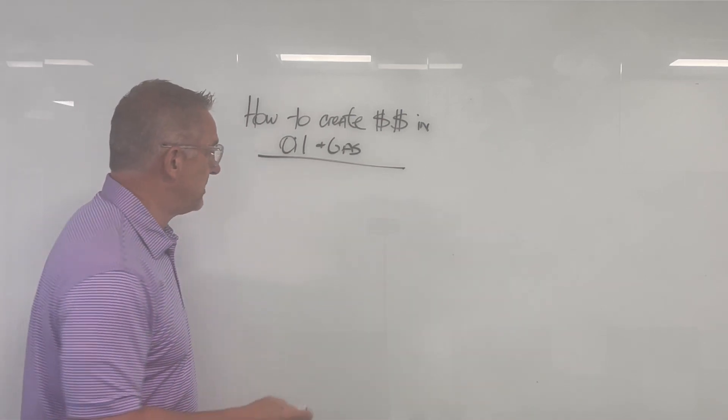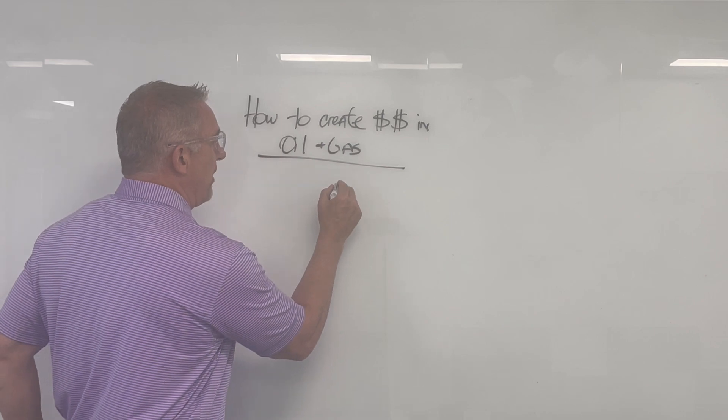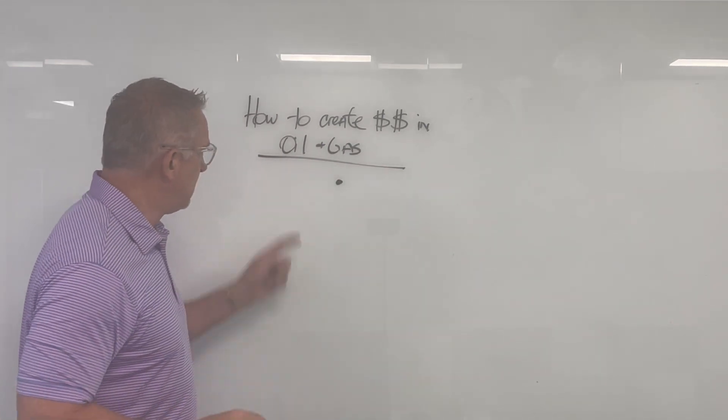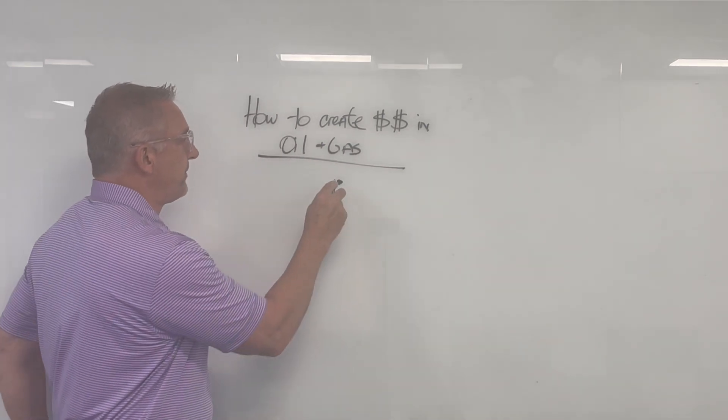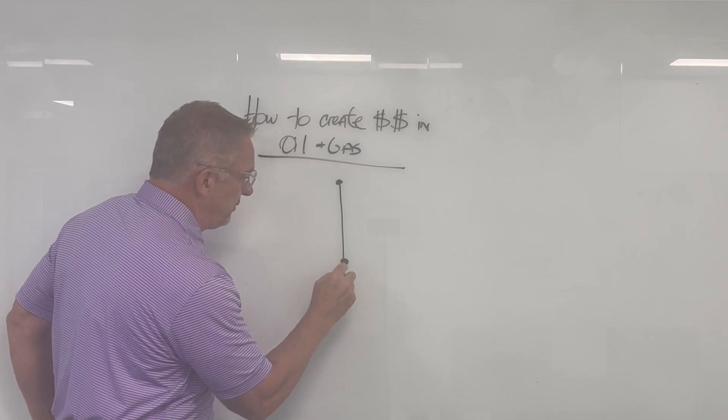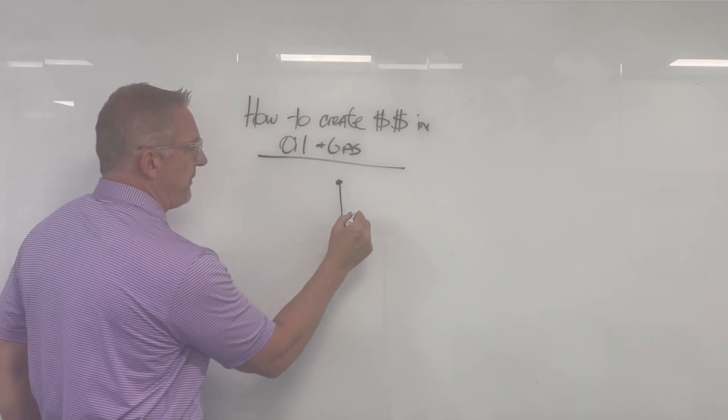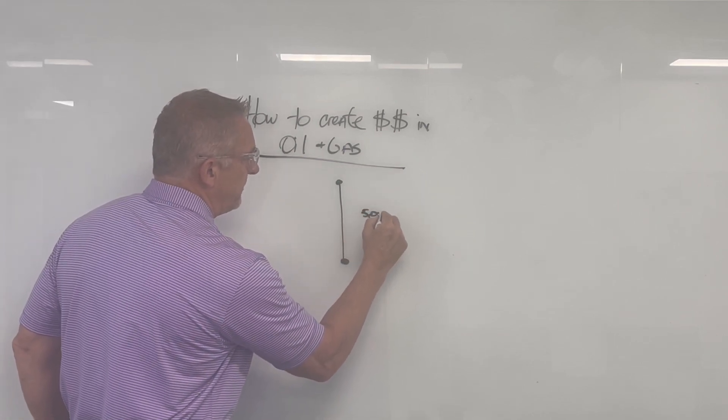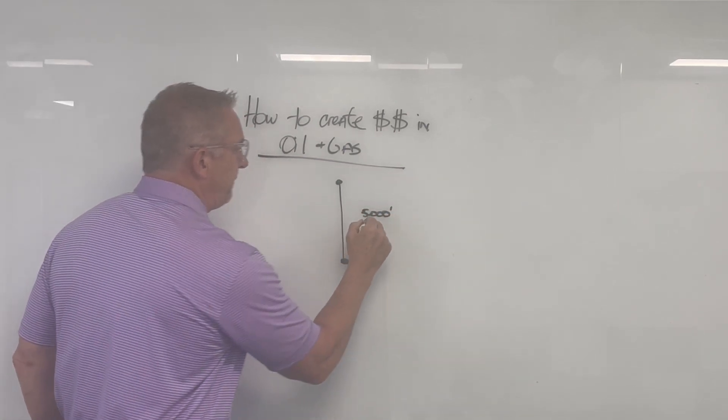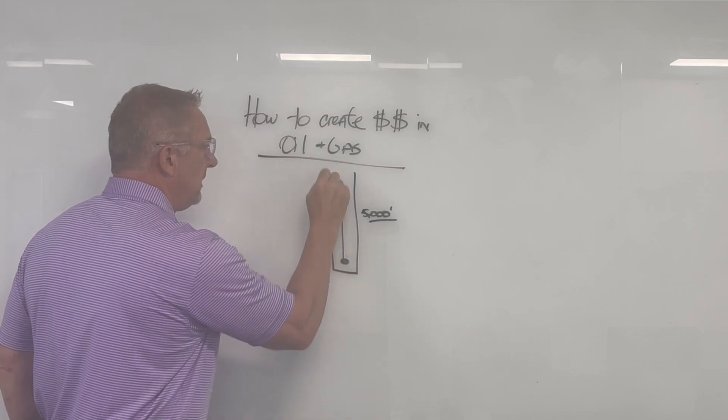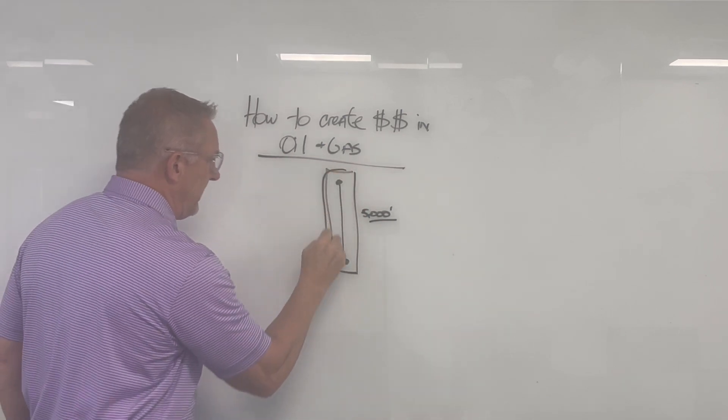Let me tell you the first secret sauce is, number one, when you drill a horizontal well, let's say you start here and you go underneath the ground, and then you drill right here. You drill a well, let's say this is a 5,000-foot lateral. That 5,000-foot lateral, all the oil in here...